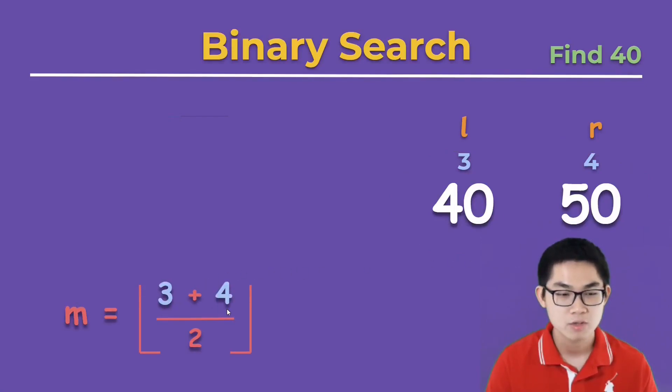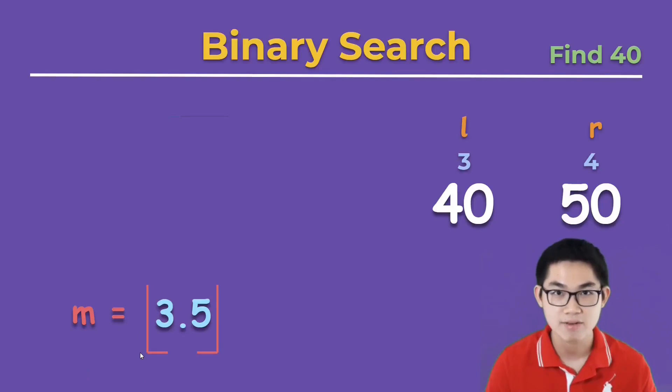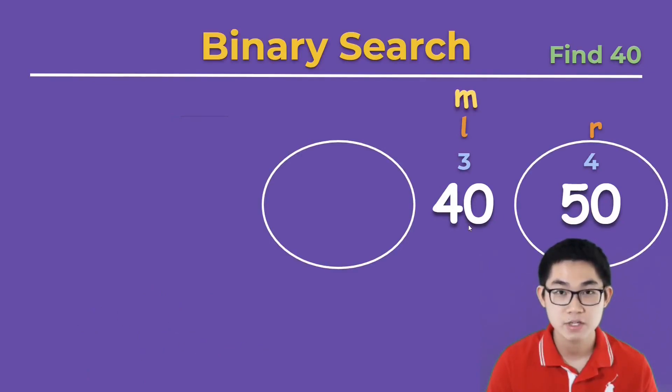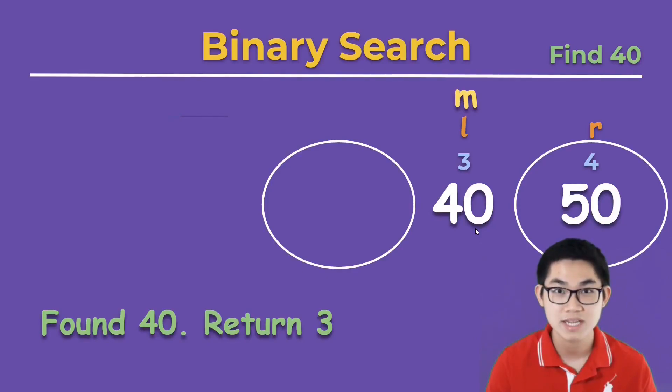We calculate mid. L is 3, R is 4, we get 7 divided by 2, which gives us 3.5. The floor sign means you basically round down, so 3.5 becomes 3. We split the array into two groups again. We first check the number at mid and we see that number 40 is here. We successfully found the number using binary search.